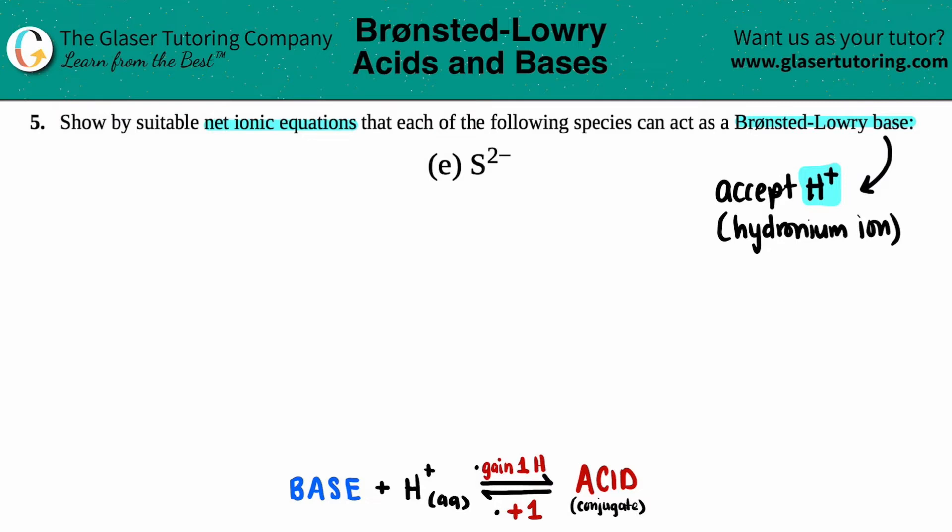Okay, so how do we write that via net ionic equation? Well, the base will always add or accept the H plus. So the base and the H plus have to be on the same side of the equation. So this is the base. I'm going to start with that. S²⁻ plus H⁺. Now, since I'm dealing with ions, they both are charged. With the net ionic equation, that's always going to be aqueous. And since we're also dealing with acids and bases, that's also aqueous solutions as well.